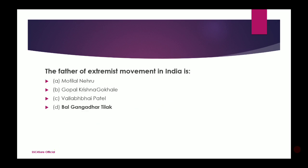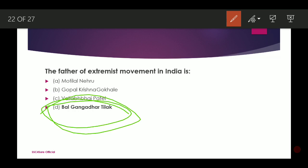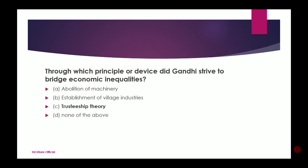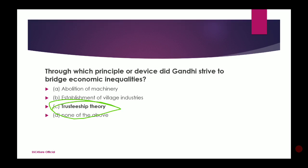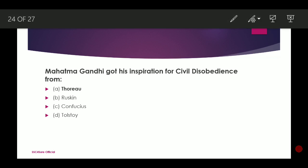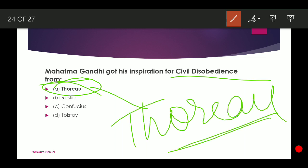The father of the extremist movement in India is Bal Gangadhar Tilak. Next: Through which principle did Gandhi strive to bridge economic inequalities? Gandhi derived many things to uplift the poor — the theory was the Trusteeship Theory. Next: Mahatma Gandhi got his inspiration for civil disobedience from Thoreau — T-H-O-R-E-A-U — an English writer.